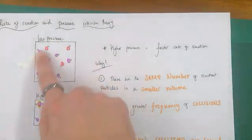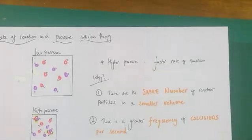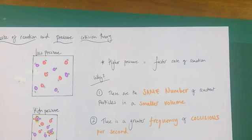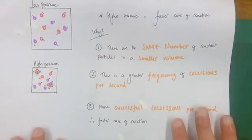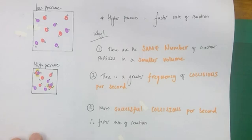A smaller volume with the same number of gas particles will cause a greater frequency of collisions to occur per second. If there's a greater frequency of collisions per second, there are more collisions happening per second. That will lead to a greater proportion or number of successful collisions per second and hence a faster rate of reaction.